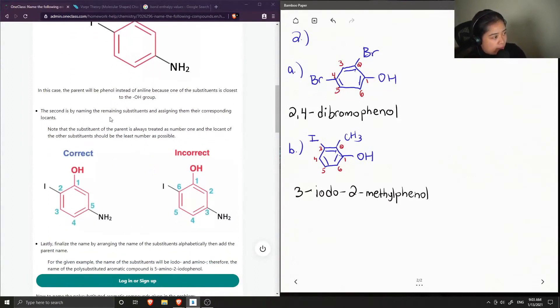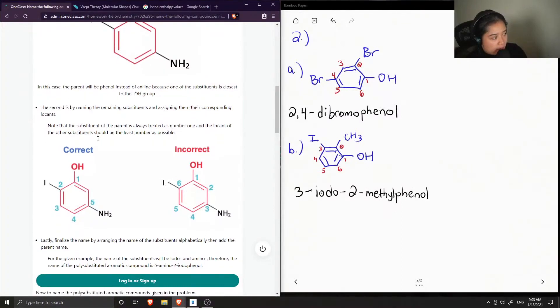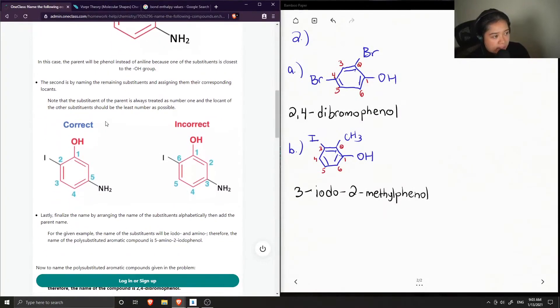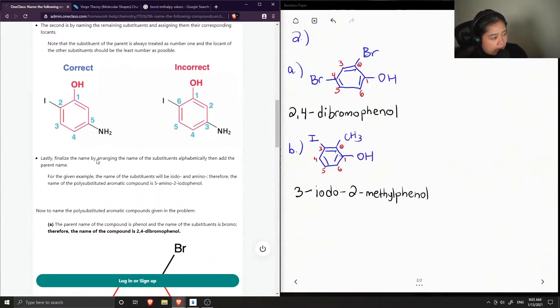The second is by naming the remaining substituents and assigning them their corresponding locants. Note that the substituent of the parent is always treated as number 1 and the locant of the other substituents should be the least number as possible. So they showed how they would number this particular example.